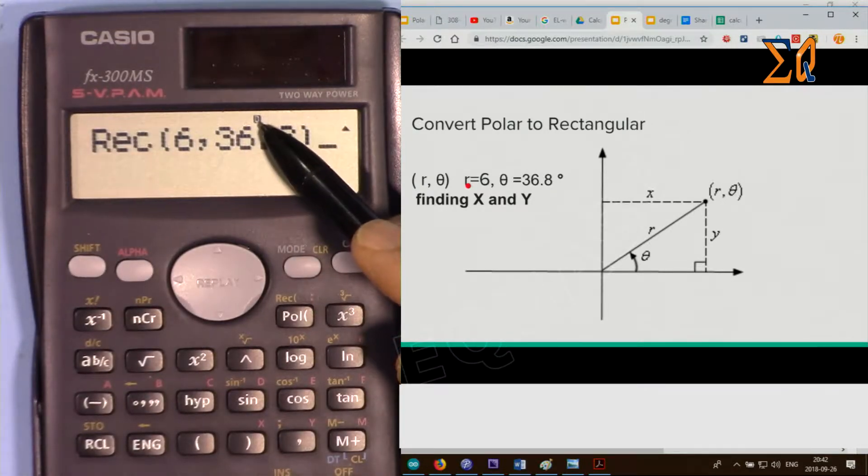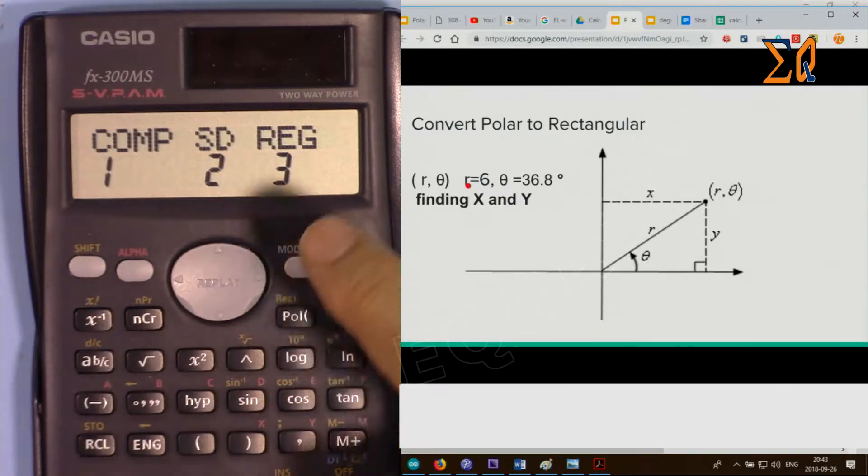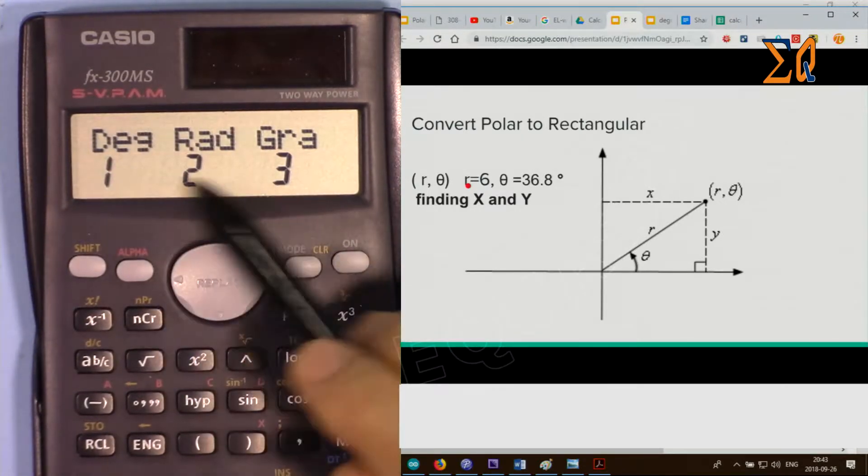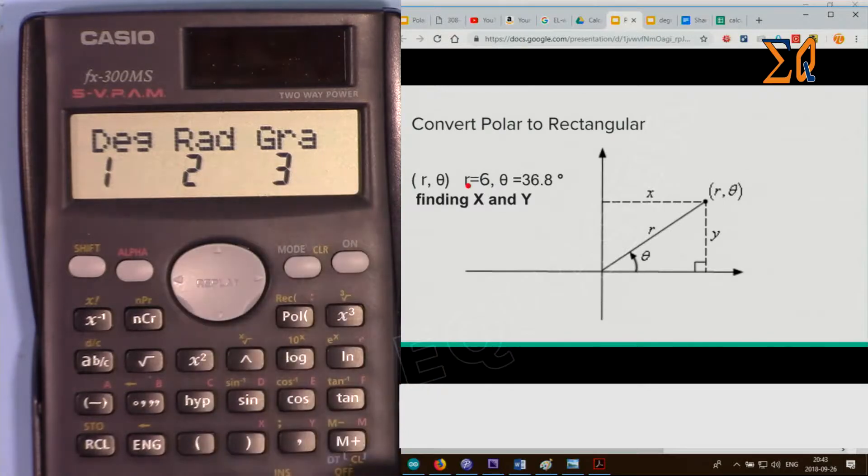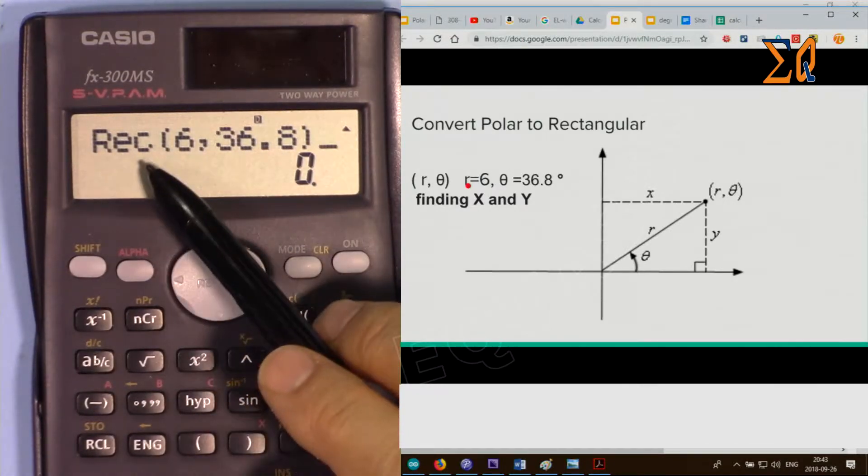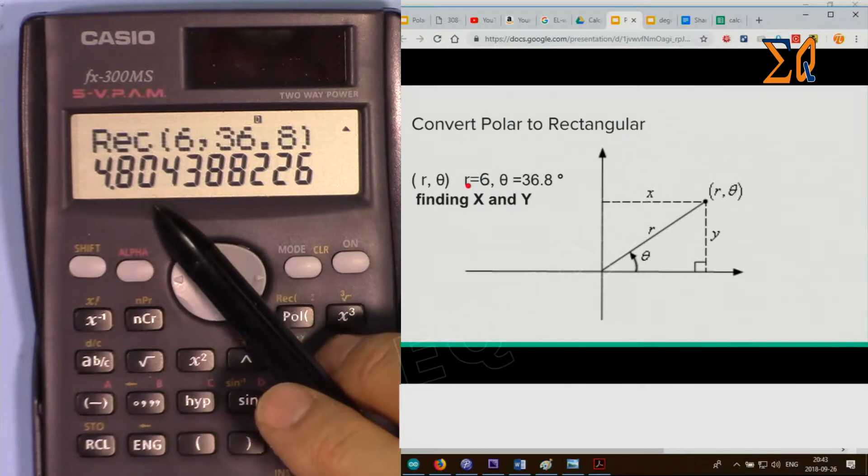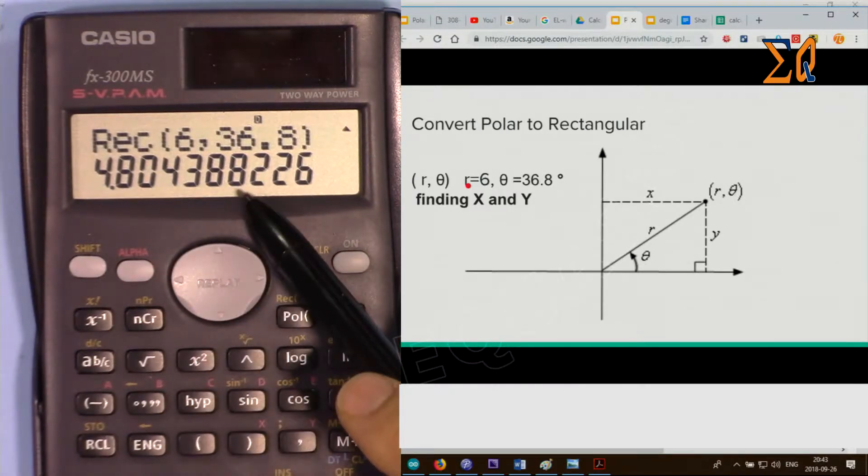Because this is degrees I must be in degree mode and there must be D. If it's not there, press mode once and then twice and then select degree. If I press 1 it goes to degree which it already was. Press equal. Now this is the X, so 4.804.